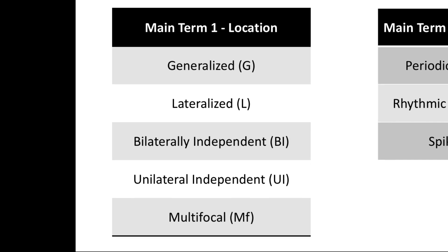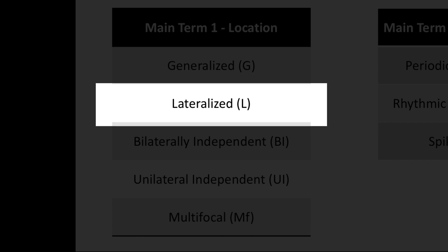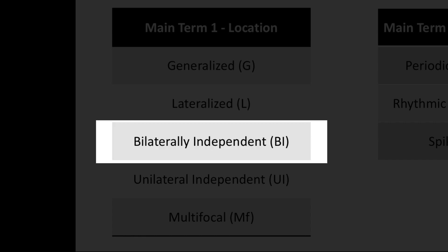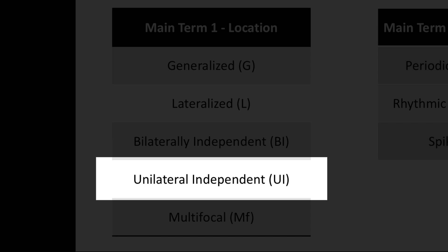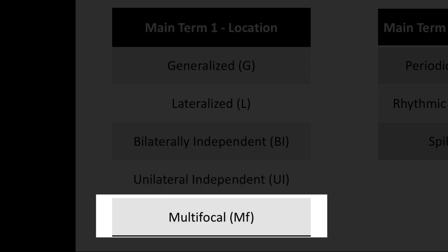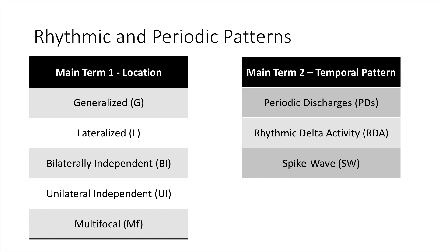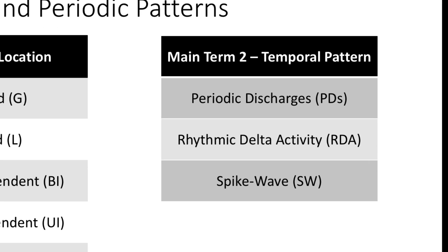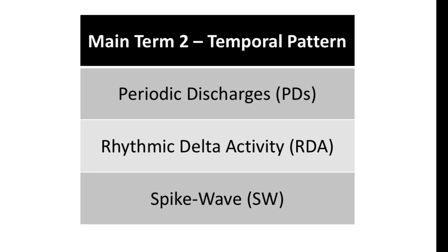The first main term alludes to the location. The location of these patterns can be generalized, lateralized, bilateral but independent in both hemispheres, unilateral with two or more independent foci, and multifocal. The second term relates to the overall temporal pattern over time of these abnormalities.